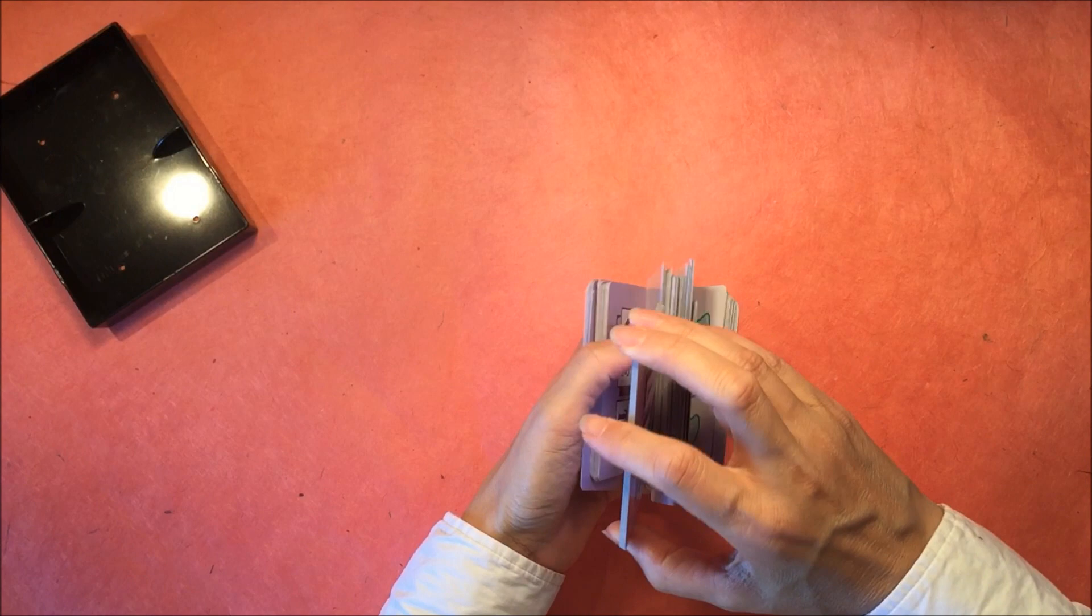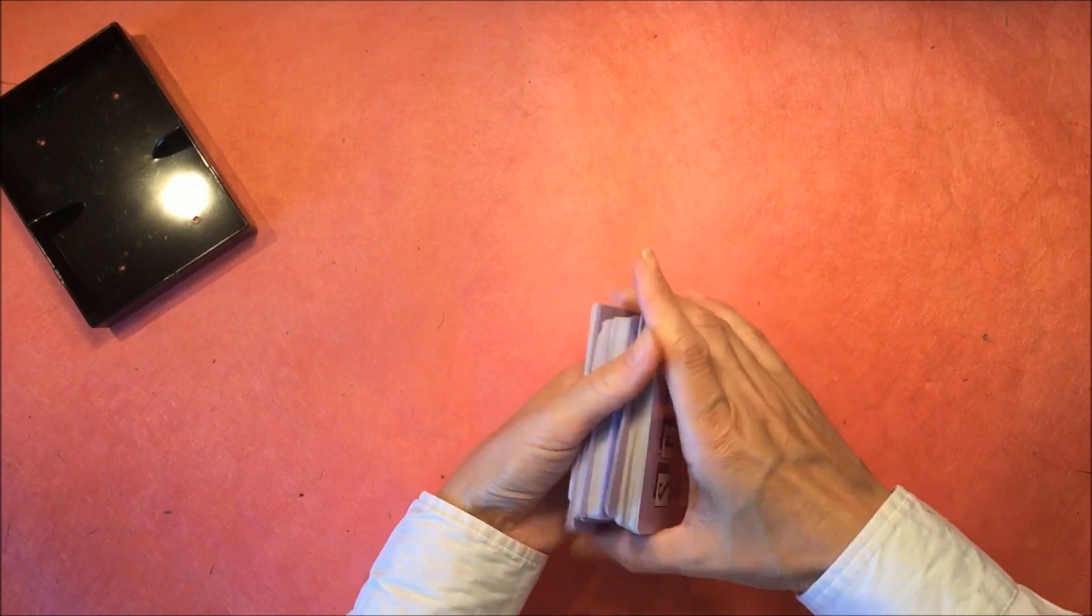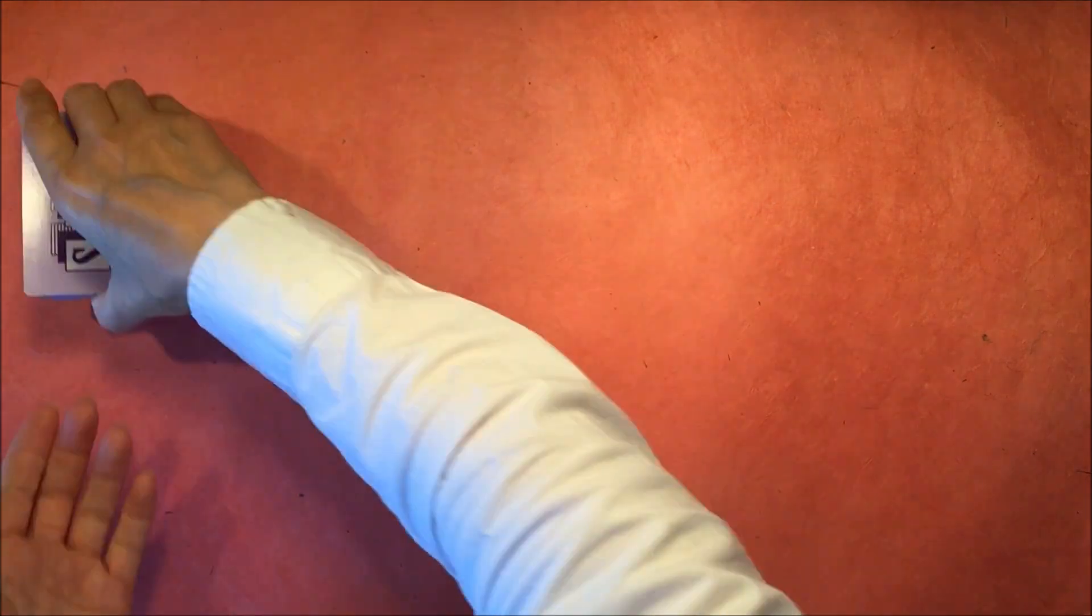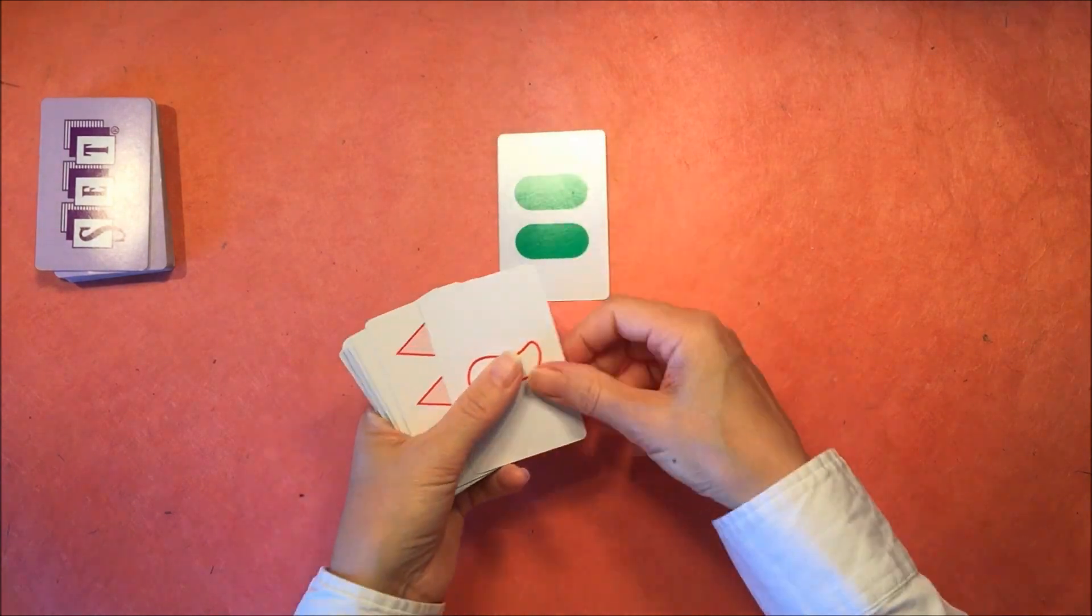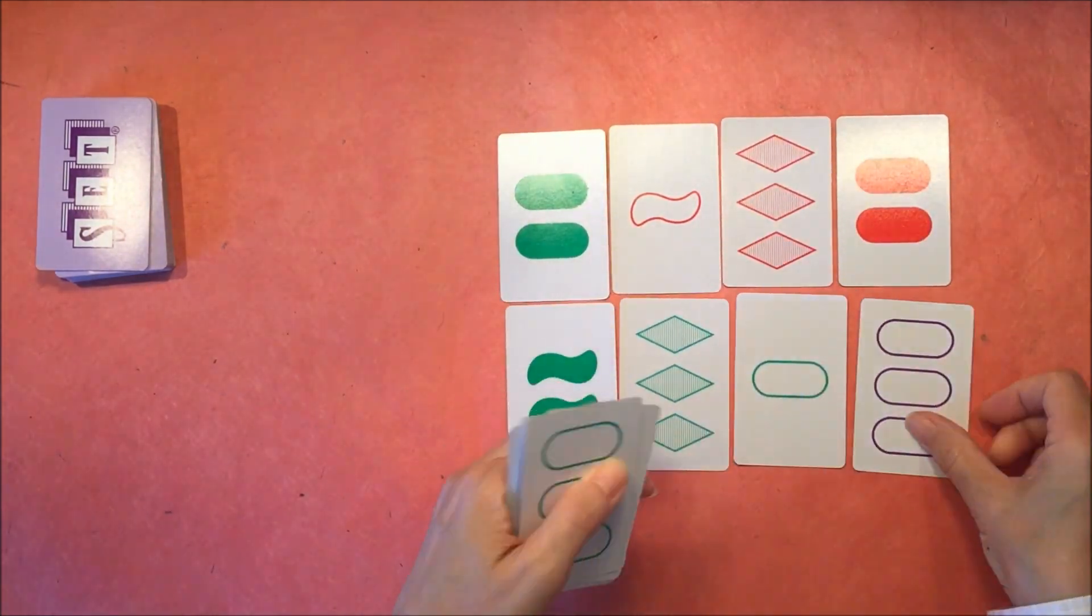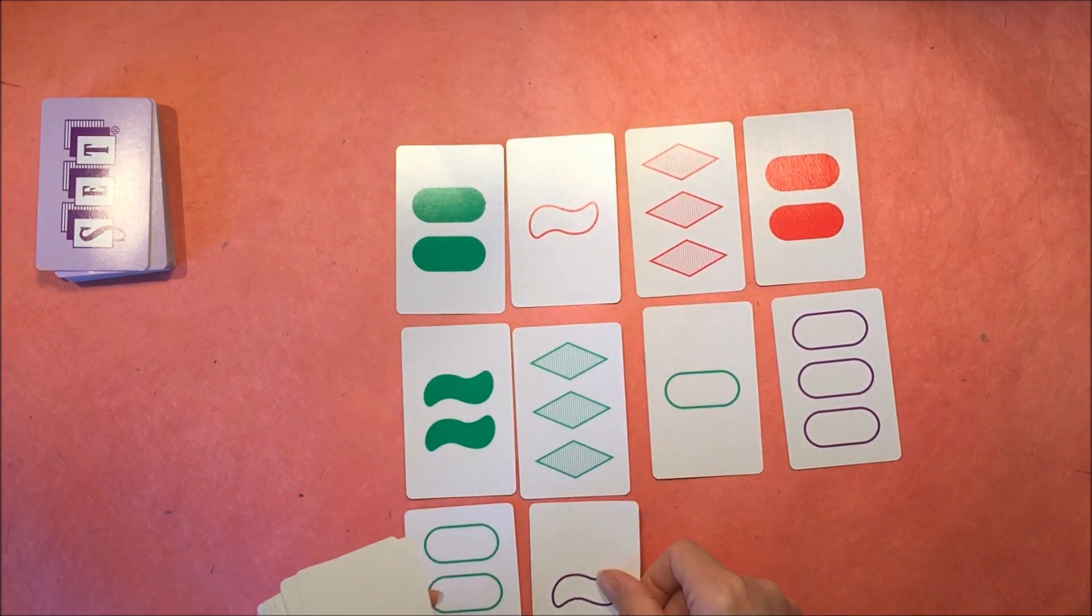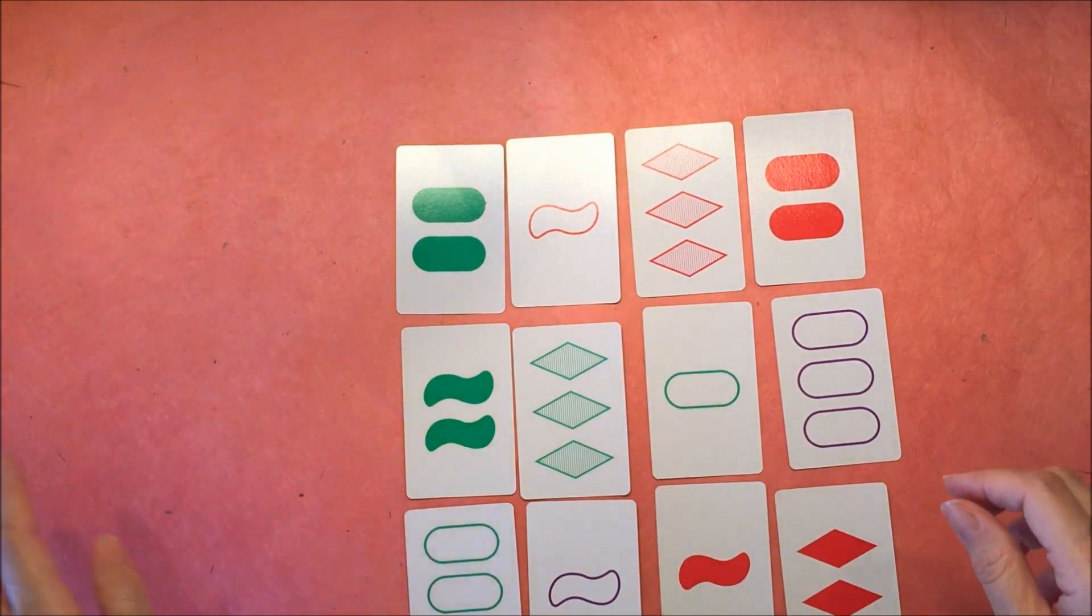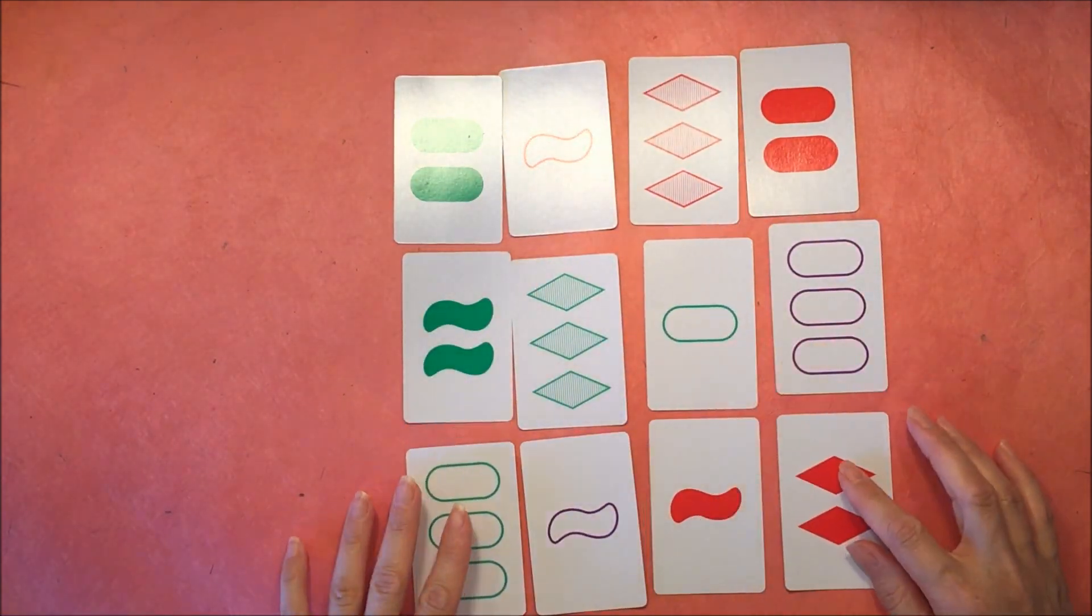So first off, I mix up the cards, and then you want to place 12 cards face up. And you always have 12 cards facing up. So once you make a set, which is 3 cards, then you add another 3 cards to the group.